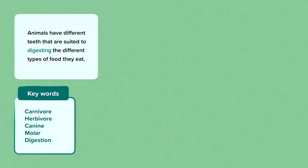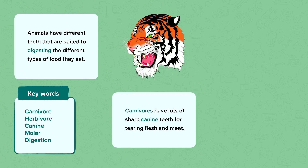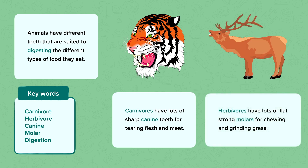Animals have different teeth that are suited to digesting the different types of food that they eat. For example, carnivores have lots of sharp pointy canine teeth — we can sometimes see them sticking out, like in this tiger. Canine teeth are needed by carnivores for tearing the flesh and meat off their prey. Whereas herbivores have many more flat strong molars for chewing and grinding all of the plant material and grass that they eat.